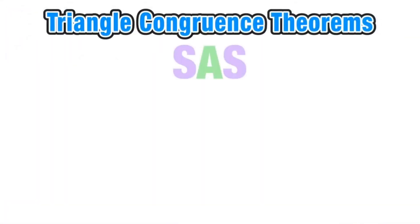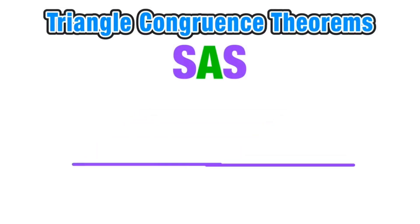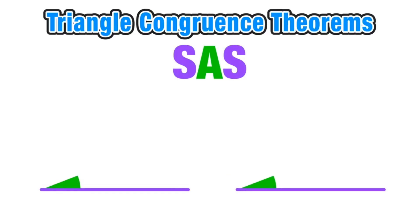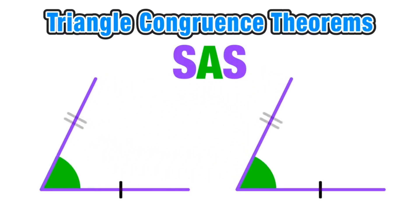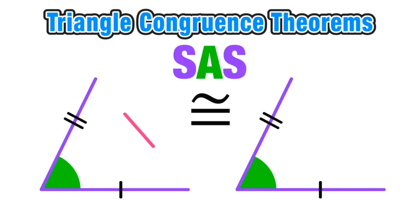Our next theorem is Side-Angle-Side. For this theorem we start with a pair of corresponding congruent sides in two triangles, a pair of corresponding congruent angles, and another set of corresponding congruent sides. Notice that the letter A is in between the two S's in the name of the theorem — this corresponds with the congruent angle being in between the two congruent sides. When this is the case, we have enough information to say the two triangles are congruent by Side-Angle-Side.